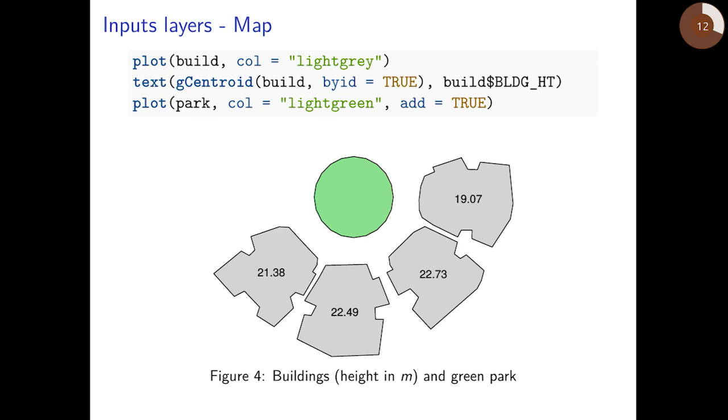For the first three examples we use a sample data set provided with the package named build, representing the outline of four buildings. The buildings are associated with a height attribute named building height shown as text labels here, and the second layer named park represents a park shown in green.